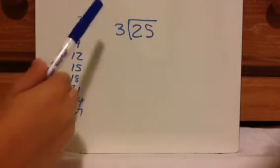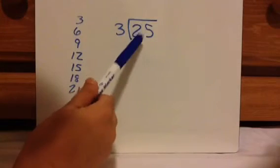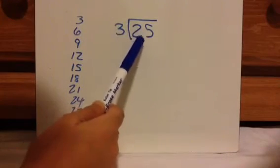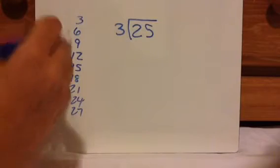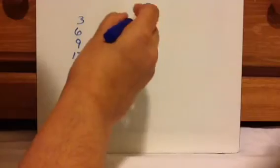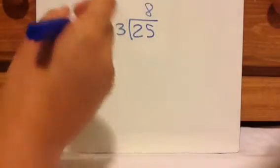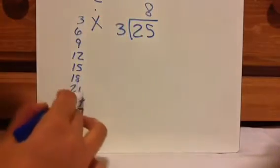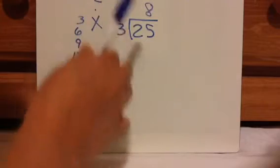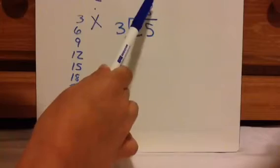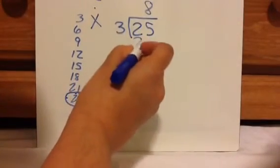So what you do is you see how many times 3 can go into this number. 3 can't go into 2, but 3 can go into 25. The most times it can go in is 8, so it can go in 8 times. And so that's your first step: division. Your second step is to multiply. You multiply 8 times 3, which would be 24. You're saying the best I can do is 8, and that would be 24.